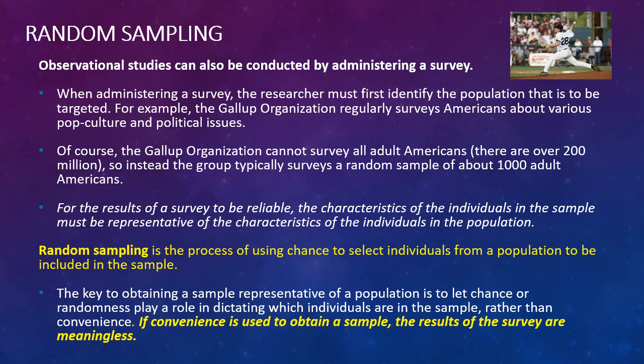They were saying if the Gallup Poll wanted to figure out what percentage of Americans were fans of baseball, yet they waited outside a baseball stadium to survey people. This is what they would call a sample of convenience. And it's also going to be skewed because while maybe not everyone going to a baseball game is going to be a fan, you can assume a good majority are or they wouldn't be there to begin with. So that's a nice little example to explain that if you use convenience to find people, then your results are skewed or, as it says here, meaningless.